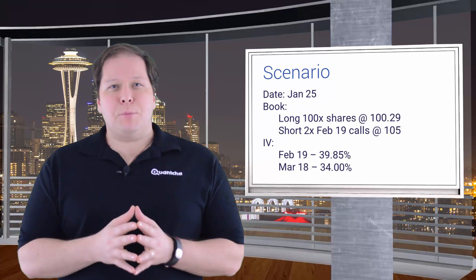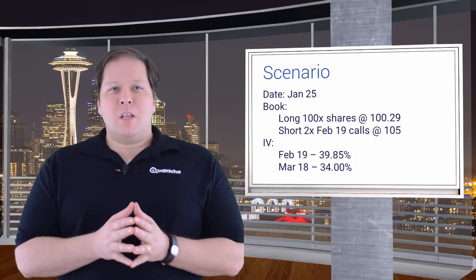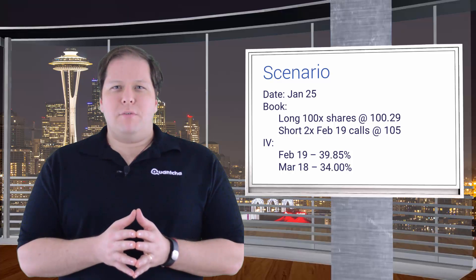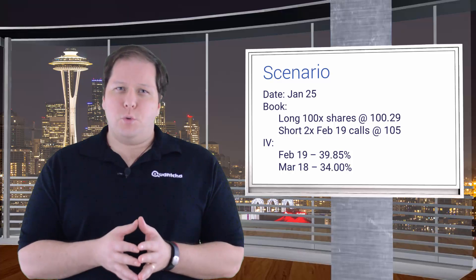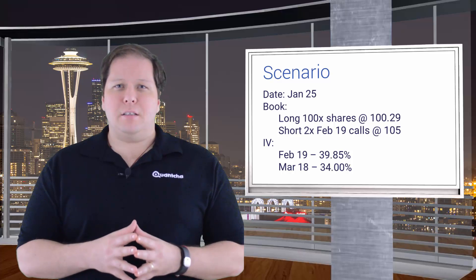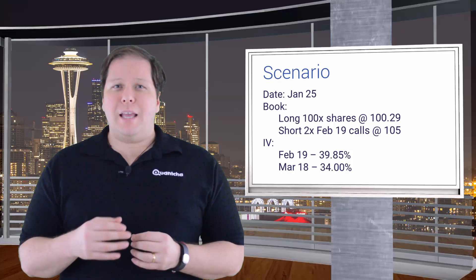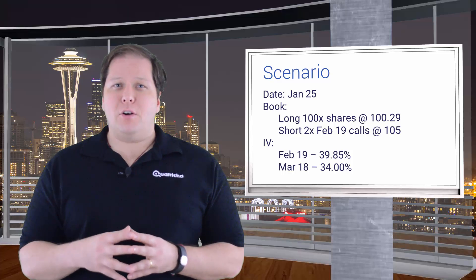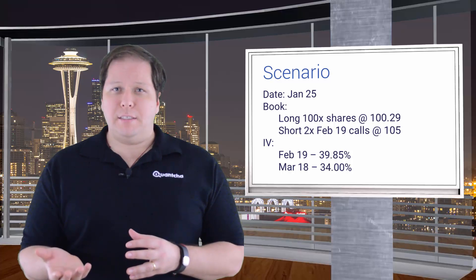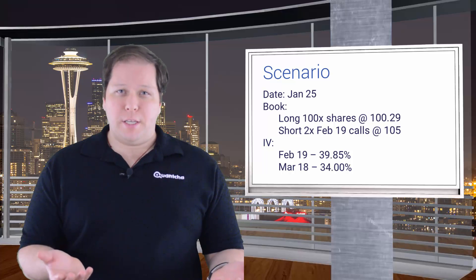Let's use an example scenario to illustrate this. Assume today is January 25th and we have a book that is long 100 shares and short 2 call contracts for February 19th. We also know that the at-the-money implied volatility for the underlying is around 40 for February 19th and at 34 for March 18th.